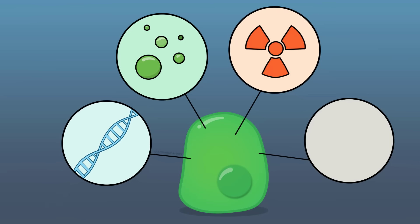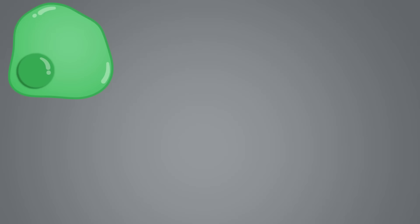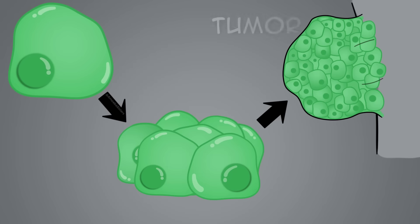Exposure to toxins, radiation, excessive exposure to UV light, all of these can be risk factors for some cells to become cancerous. The uncontrolled growth that cancer cells have gives rise to more cells like them, which can develop into a tumor.